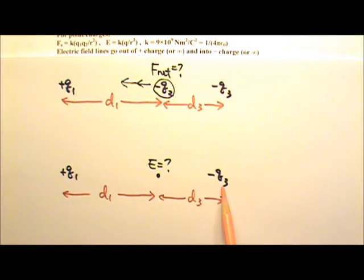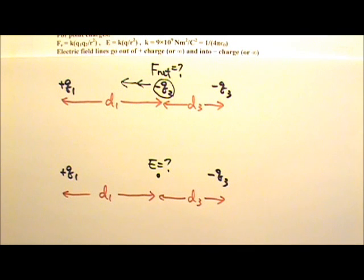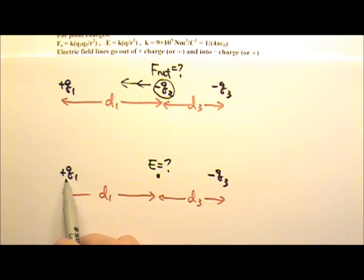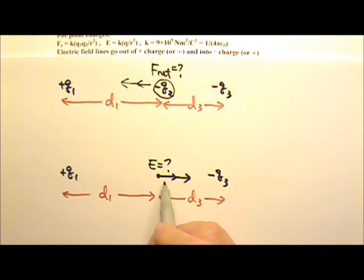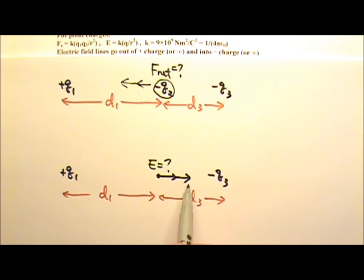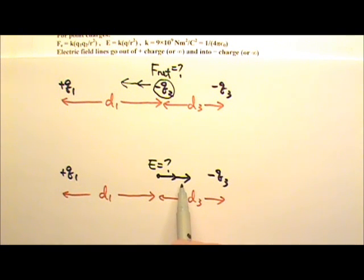Or I may have two point charges, Q1 and negative Q3, and I can ask you to find the electric field at a certain location in space. In this case, two point charges are producing electric field there. The field produced by the positive charge goes to the right, and the field produced by the negative charge also goes to the right. I use KQ over R squared to find each field and add the magnitudes, or subtract if they are in opposite directions.